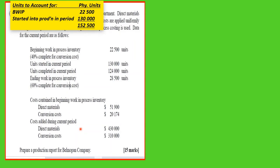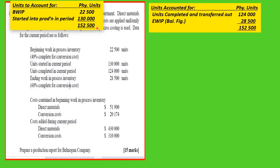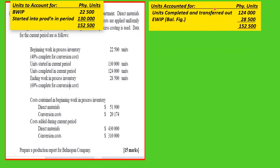Whether you are using actual or weighted average, you always account for the physical units first. Beginning work in progress is 22,500 units. Units started in the current period are 150,000. Adding the two together gives 152,500 units in process during the period. Units completed and transferred out were 124,000.